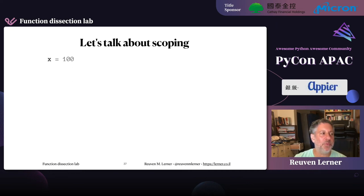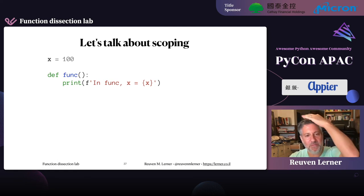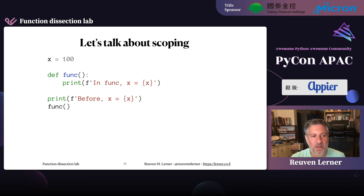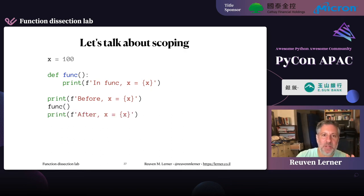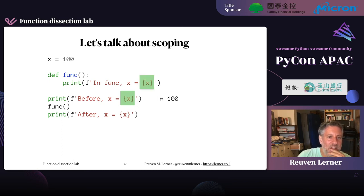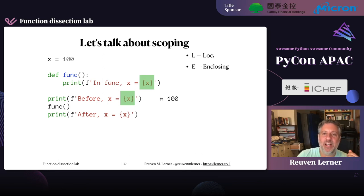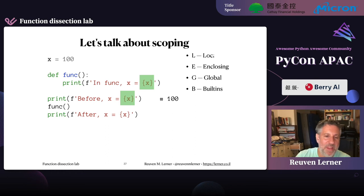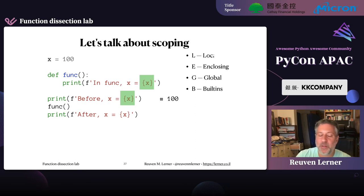Now let's talk about scoping. If x = 100 and I define a function that prints x, what gets printed? Python uses LEGB: local, enclosing, global, built-ins — always in that order. Outside a function, Python checks global then built-ins. Inside a function, Python checks all four scopes. Inside the function, is there a local x? No. Enclosing x? No. Global x? Yes — 100. After the function returns, x is still 100. How does Python know x is not local? It checks co_varnames — if x isn't there, it's not a local variable.